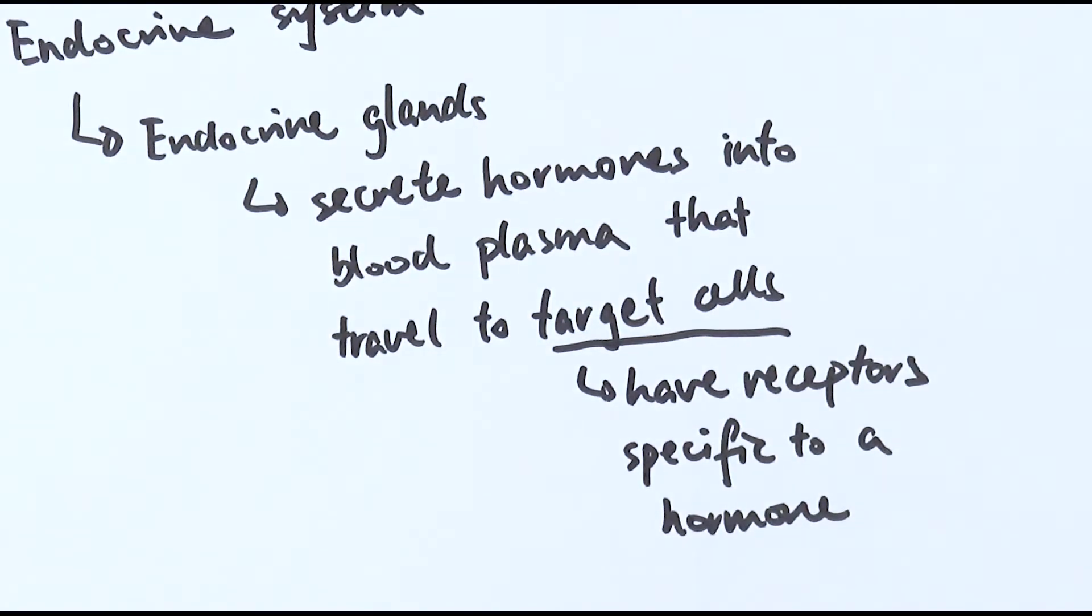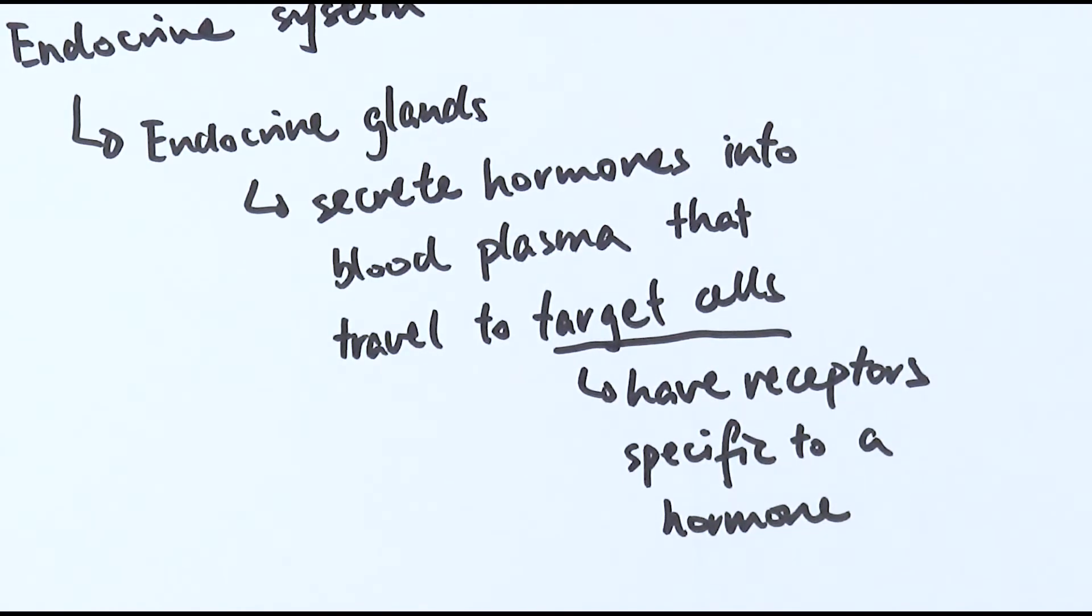These receptors tend to be specific to a particular type of hormone, meaning that they can coordinate a very particular response based on what hormone is being received at that point. So that is the endocrine system.